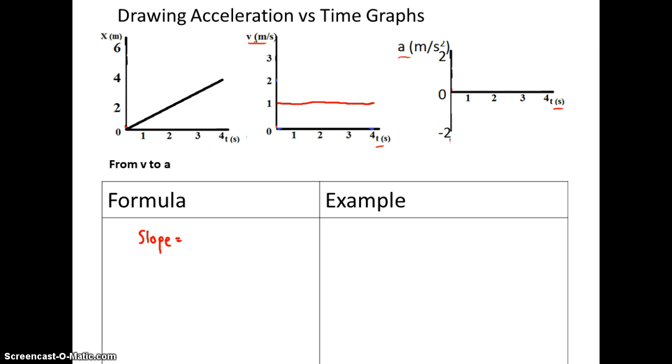Slope of our velocity time graph is the rise over the run. Our rise is, say we were to start at 0 and rise to 2, our rise is our change in v. Our run, just like before, is our change in time. Well, this just gives us the definition for acceleration. Change in velocity over a change in time. Our units are going to be meters per second all over seconds. So this gives me meters per second squared.